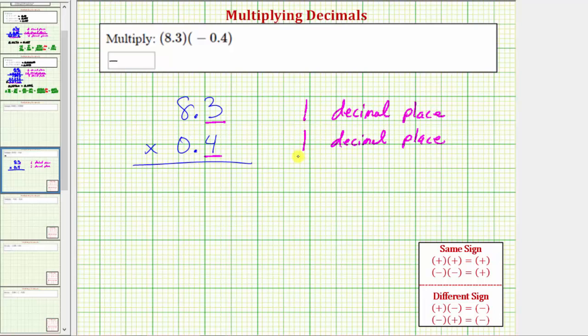To determine the number of decimal places in the product, we sum or add these decimal places. Because one plus one is equal to two, we now know the product must contain two decimal places.